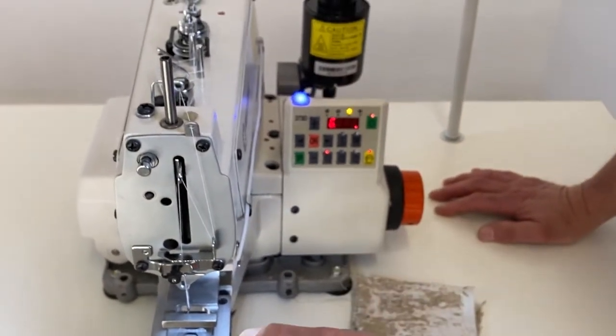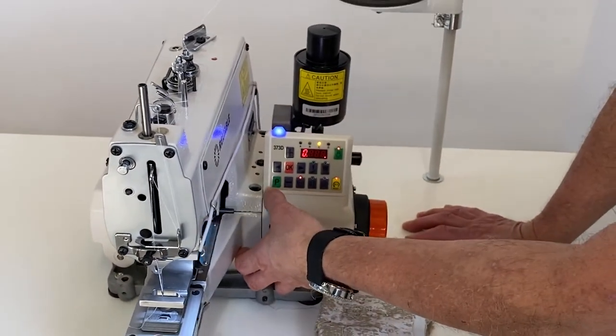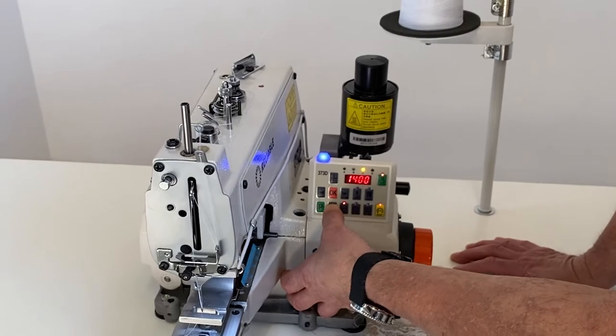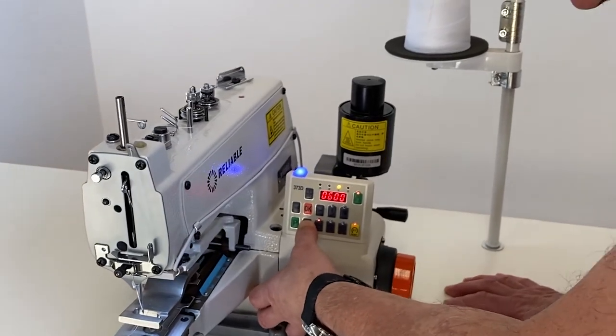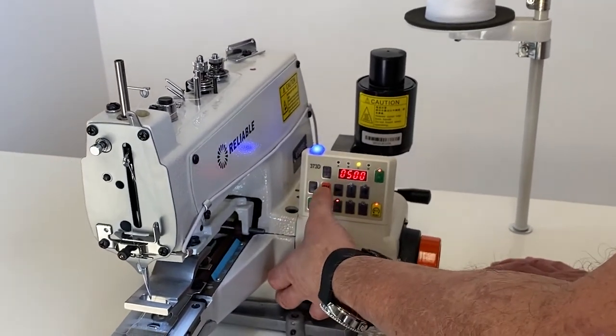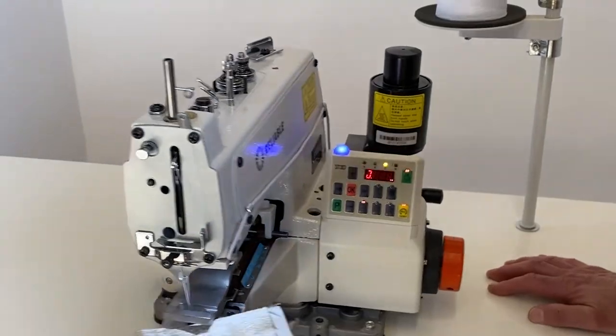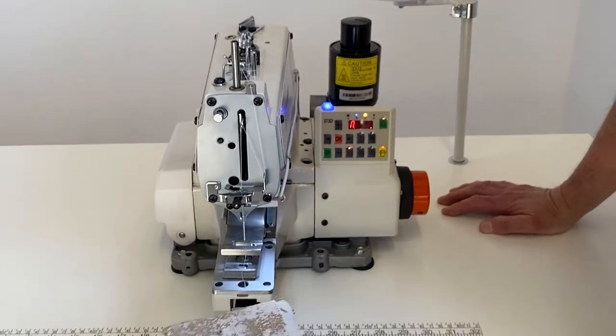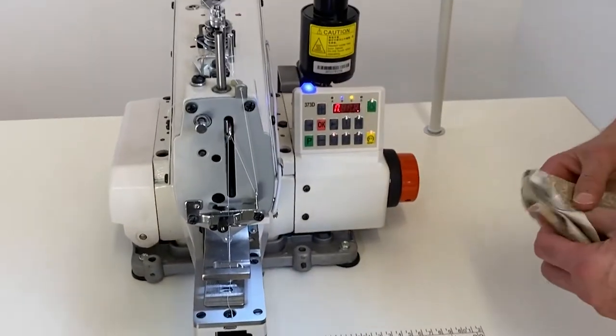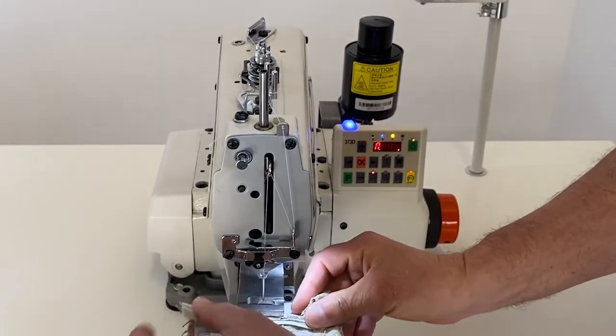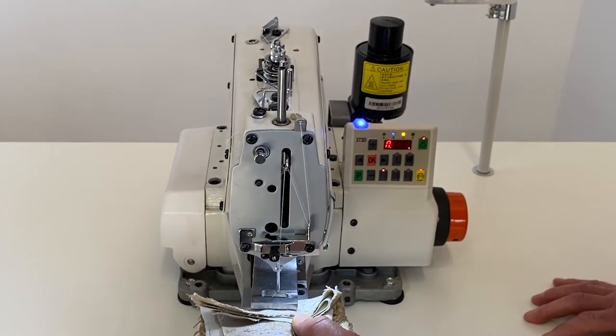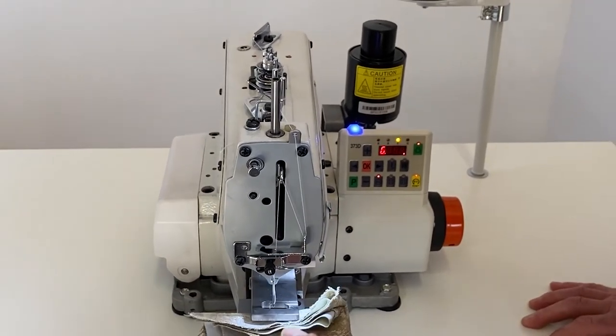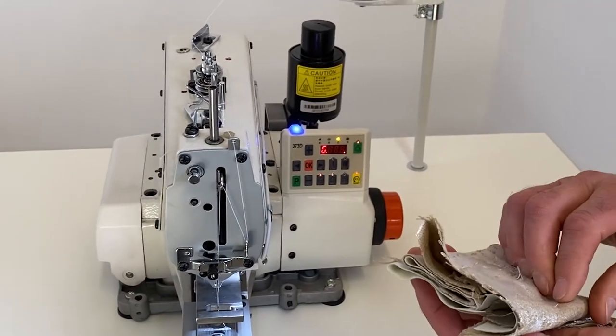When you're doing a heavy pleat, 500 rpm is where it really runs well. 500 rpm on the very heavy pleats. On something a little lighter, you could possibly run a higher speed.